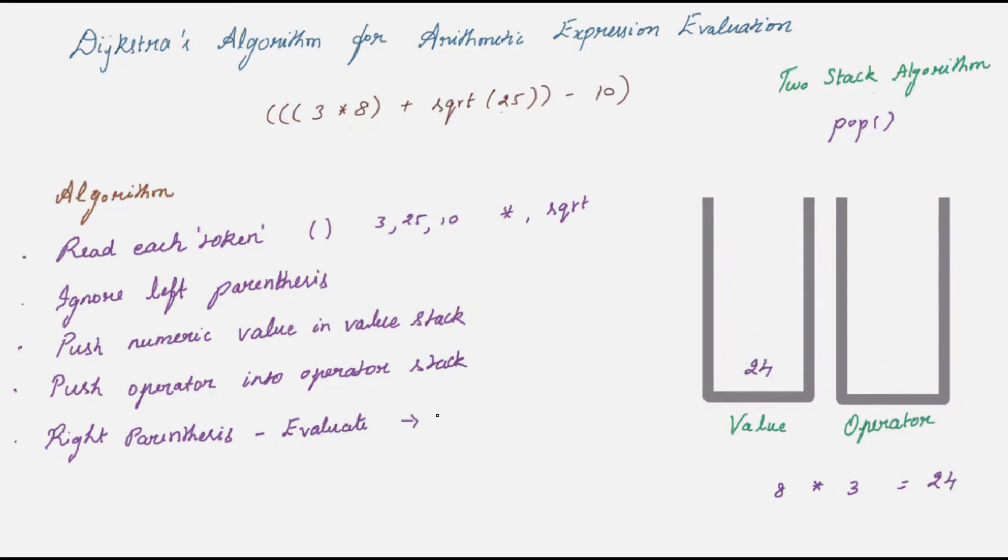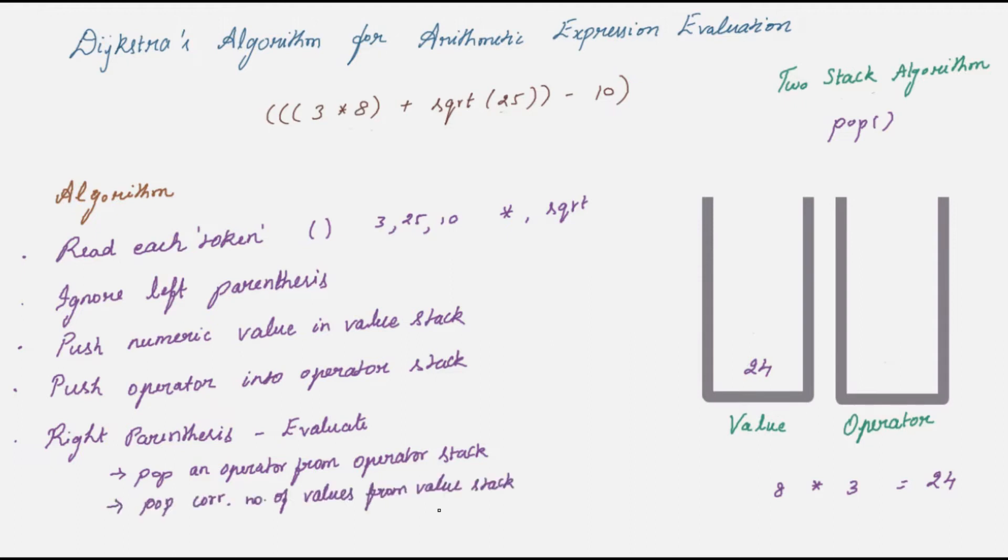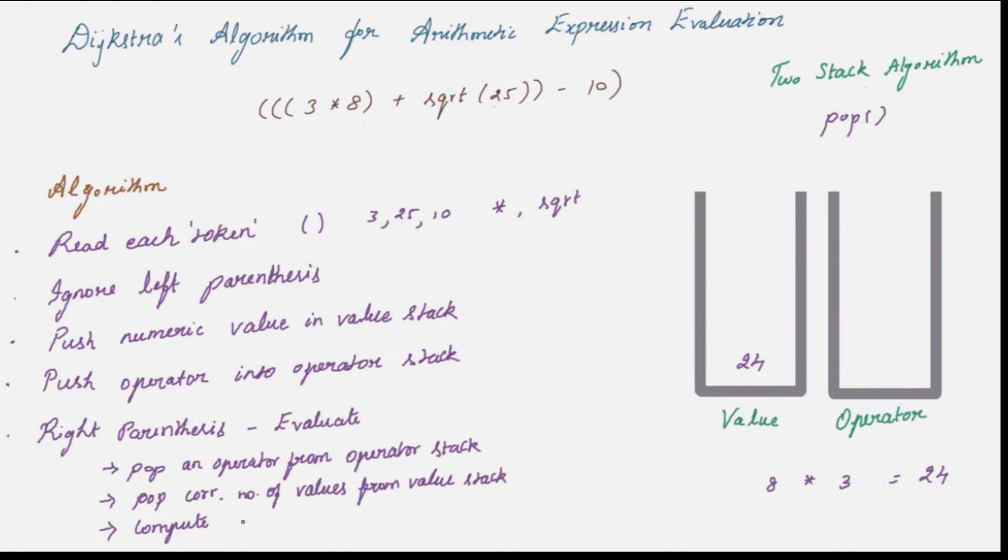So to generalize the steps: pop an operator from the operator stack. Pop the corresponding number of values from the value stack. Here we see corresponding because for most operations like multiplication or addition you need two values, but in case of square root you only need one value. Then do the computation. Push the result into the value stack. On reaching the end of the expression you will be having the final result in the value stack.